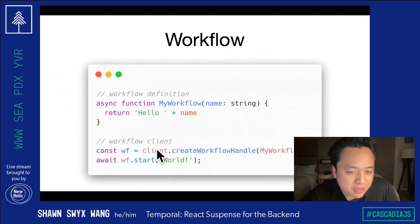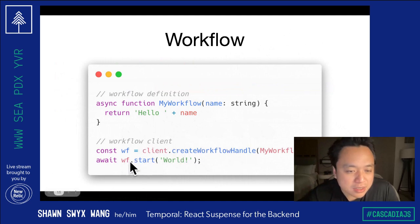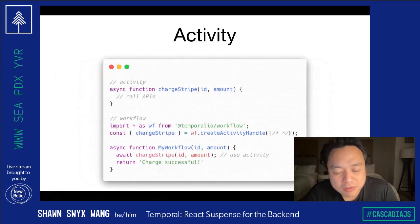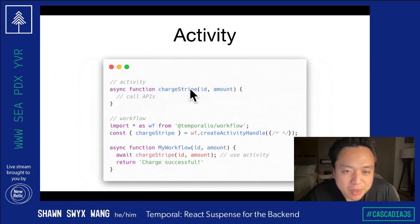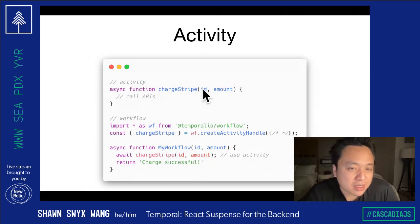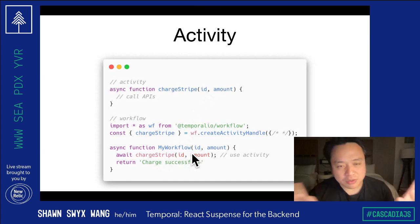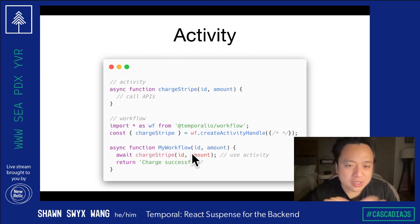For us, you don't actually render — there's nothing to render to — but you can create a client and then start that workflow. To do something, to do side effects in the real world, you write another function. For example, I'm charging some amount via Stripe. That's just a function that you call inside of your workflow. So you separate these two things into workflows and activities.